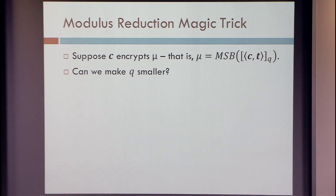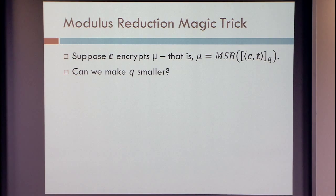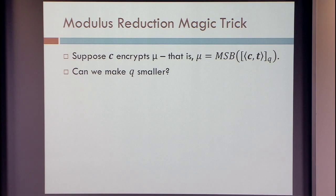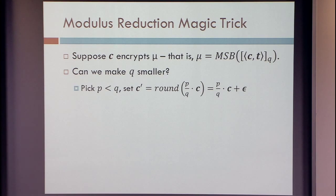This is our second rabbit — a magic trick due to Brakerski and Vaikuntanathan called modulus switching. What we want to compute is this most significant bit of the inner product mod q, but we really want q to be smaller. Can we just make it smaller? Here is one way: just make it smaller. Multiply everything by p over q, and — since we like integers — take a rounded version of p over q times our ciphertext, which we look at as the exact version plus the rounding error.